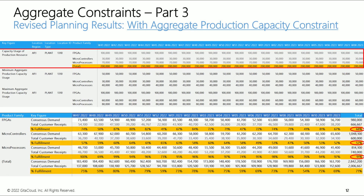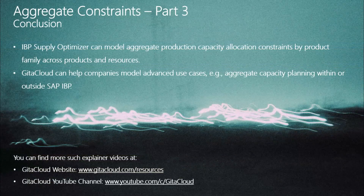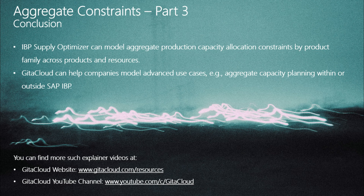The microcontroller BU leader and executive team are okay with this plan. You saw how IBP Supply Optimizer can model aggregate production capacity constraints, helping plant management implement guardrails to ensure constrained capacity is allocated fairly across product families. We can also model aggregate constraint violation costs to ensure such constraints do not produce suboptimal revenue beyond a point — the Optimizer will choose to ignore aggregate constraints if violation costs are lower than non-delivery costs. Gita Cloud offers supply optimization as a service and can help model and run advanced use cases such as aggregate capacity planning within or outside SAP IBP.